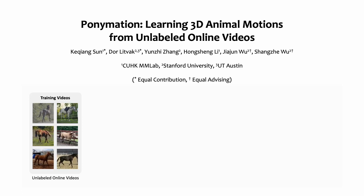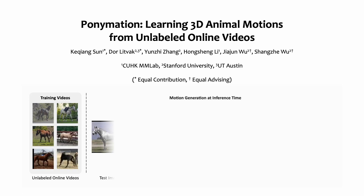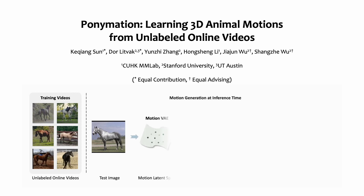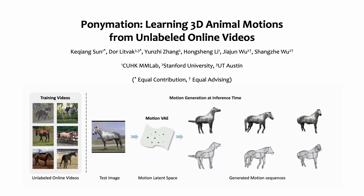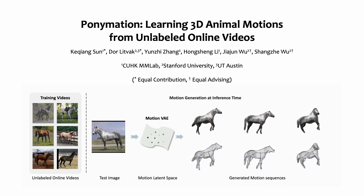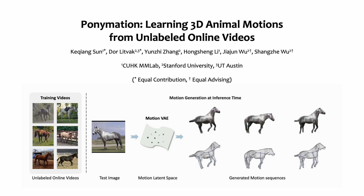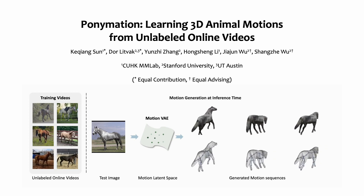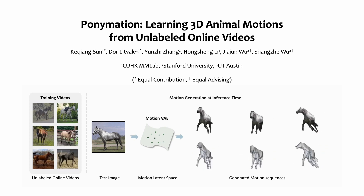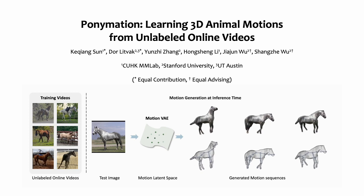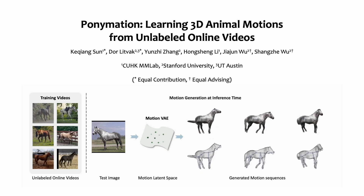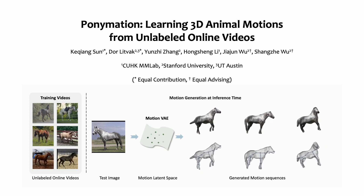We introduced PUNIMATION, a new method for learning a generative model of articulated 3D animal motions from a collection of raw, unlabeled, internet videos, without relying on any explicit pose annotations or parametric shape models.